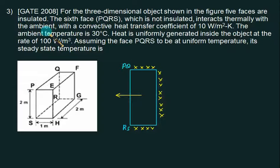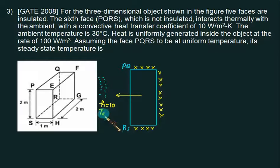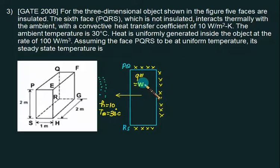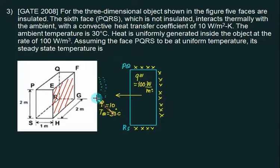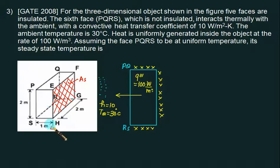The corresponding environment is a convective environment. We have H equal to 10 W/m²K and the temperature T∞ equals 30°C. It is given that heat is generated inside at the rate of 100 W/m³. The heat is convected to the surrounding fluid from the left-hand side face, and the right face and left face have the same area — width equal to 2 m and height equal to 2 m, so the area is 4 m².